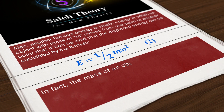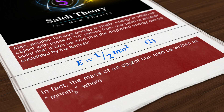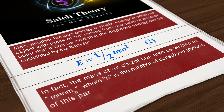In fact, the mass of an object can also be written as m = n × m_p, where n is the number of constituent photons of this particular mass and m_p is the photon mass.